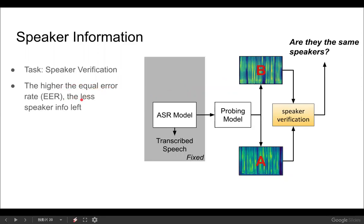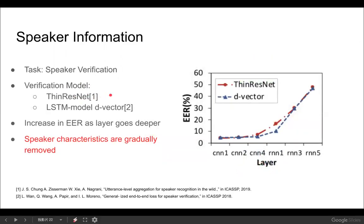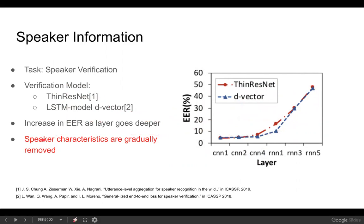We used two verification models: thin ResNet and LSTM d-vector. As can be seen from the figure, both models show an increase in equal error rate as the layer goes deeper, demonstrating that speaker characteristics are gradually removed, which is in line with our previous observations in the generated speech.